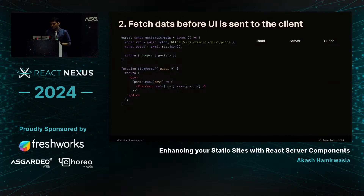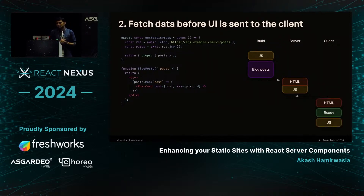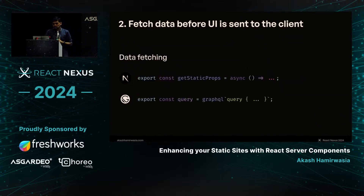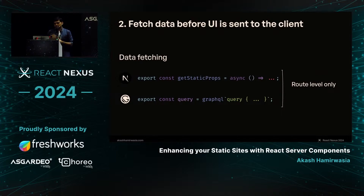In the waterfall during build: the JavaScript is parsed, the data is fetched, and the output artifact is HTML and JavaScript files pushed to the file server. When the client requests the file, it gets the HTML and JavaScript, and the UI is partially ready as soon as the HTML is received — the client doesn't have to wait for JavaScript to load. The problem is these primitives — getStaticProps and Remix's equivalent — are at route level only. You need to create special page components, and only in those can you expose these functions where data fetching happens.